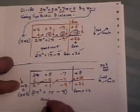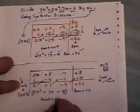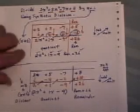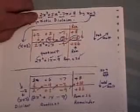So this is my quotient. This is my remainder, plus 26. This is my divisor. And of course, my original dividend was 2x cubed plus 5x squared.